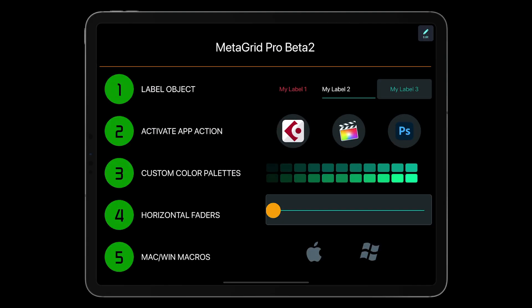So here is my MetaGrid Pro with a dedicated grid that I've made for this presentation, which doesn't look like a MetaGrid grid, right? So as you can see in point 1, we have added label objects. These simple text objects will enable you to make your grids more descriptive and more attractive visually.